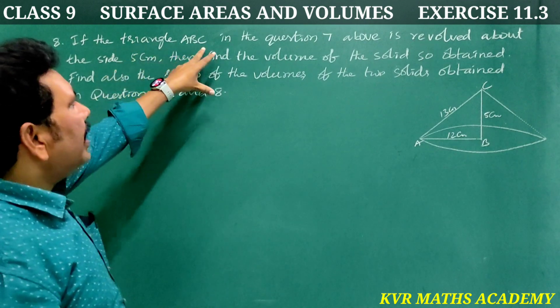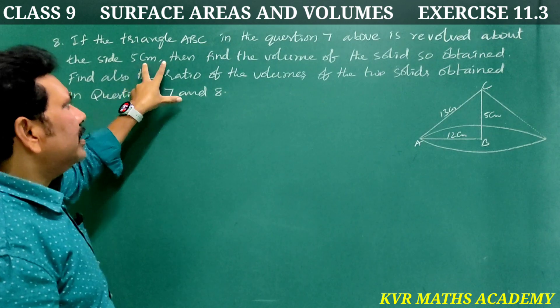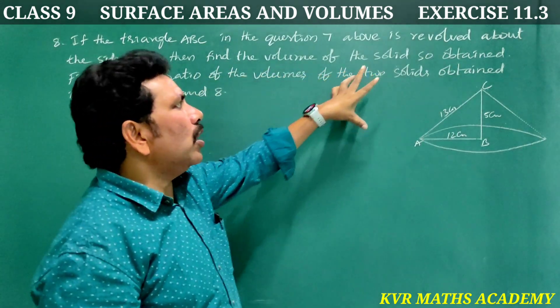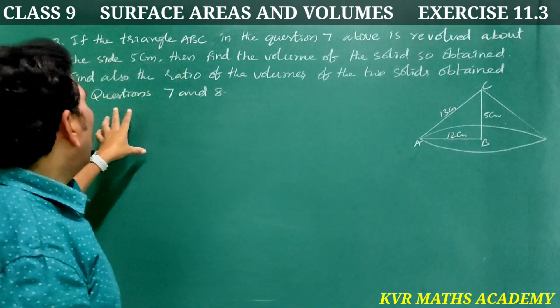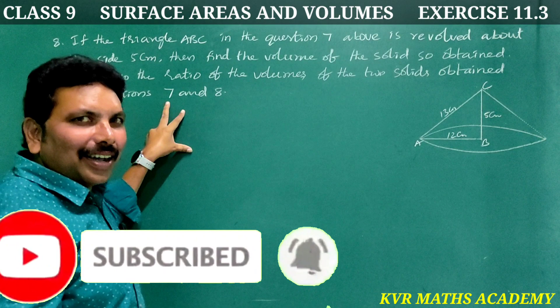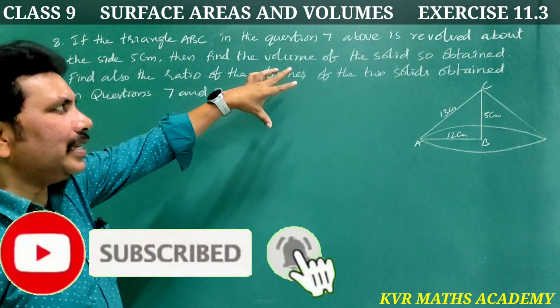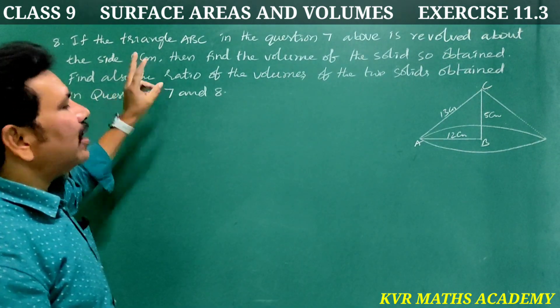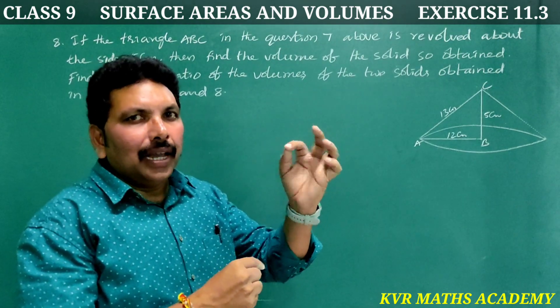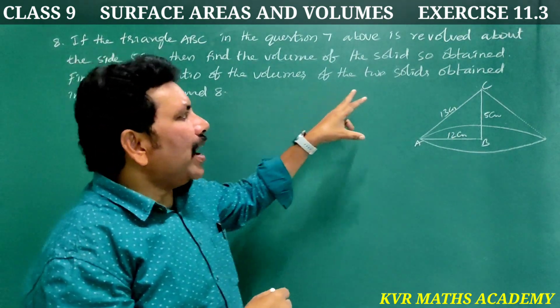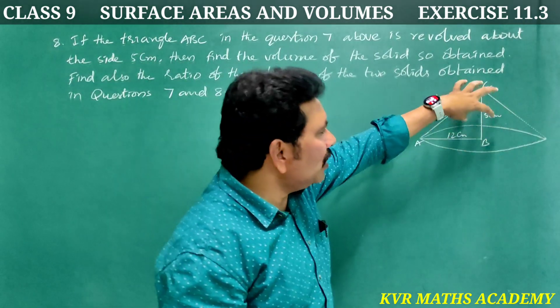Question 8: If the triangle ABC in question number 7 above is revolved about the side 5 centimeters, then find the volume of the solid so obtained. Find also the ratio of the volumes of the two solids obtained in question 7 and 8.